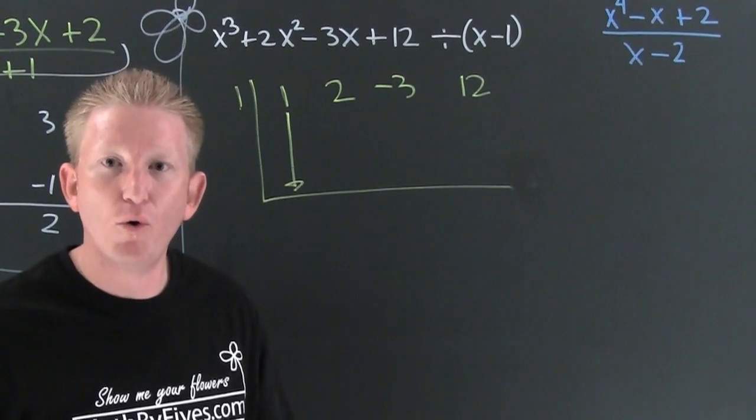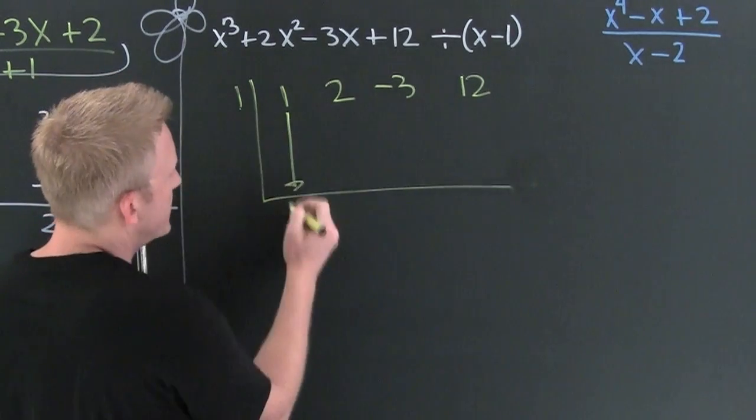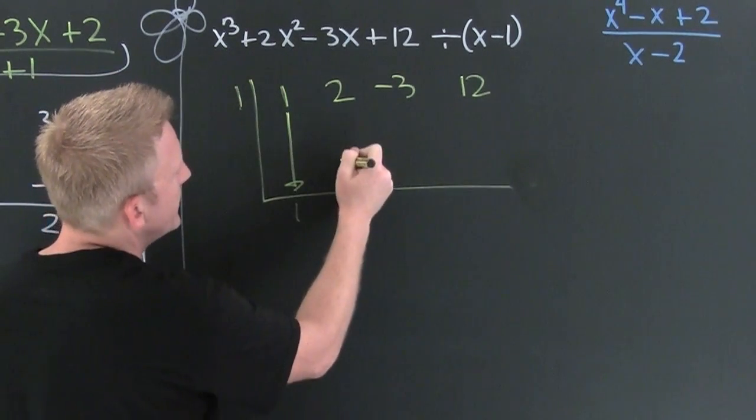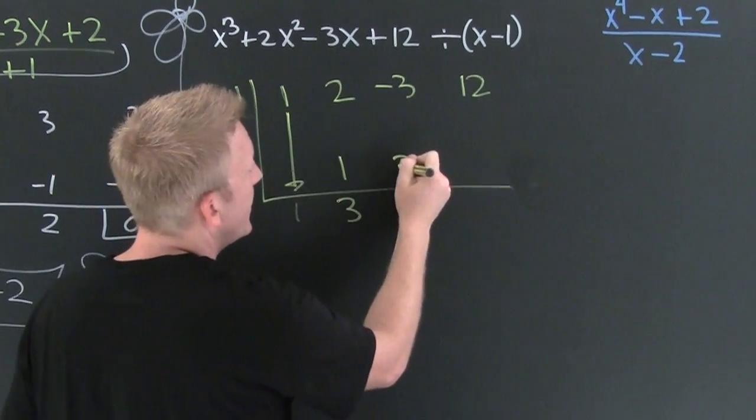Here's a 1. This one times that one, put it there. That's a 1. 2 and 1 is 3. This one times that one, put it there. That's 3.